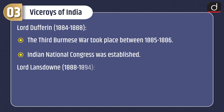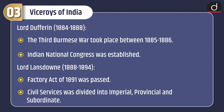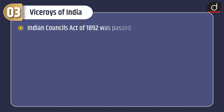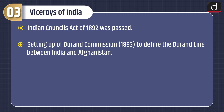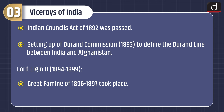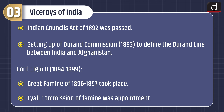Lord Lansdowne, 1888–1894: the Factory Act of 1891 was passed. Civil Services was divided into Imperial, Provincial, and Subordinate. The Indian Councils Act of 1892 was passed. Setting up of the Durand Commission in 1893 to define the Durand Line between India and Afghanistan. Lord Elgin II, 1894–1899: the Great Famine of 1896–1897 took place. The Lyall Commission on Famine was appointed.